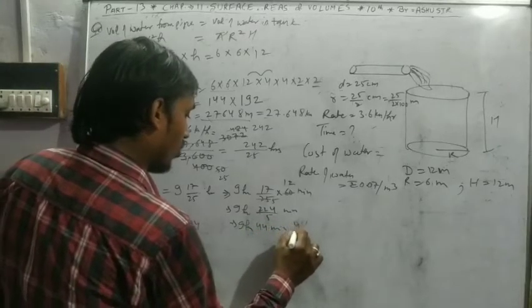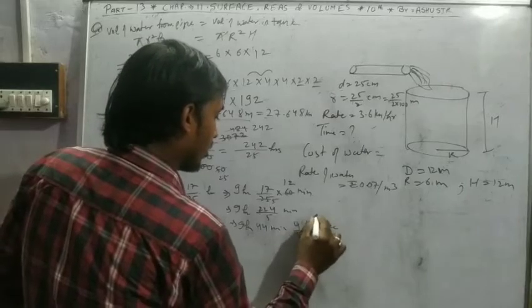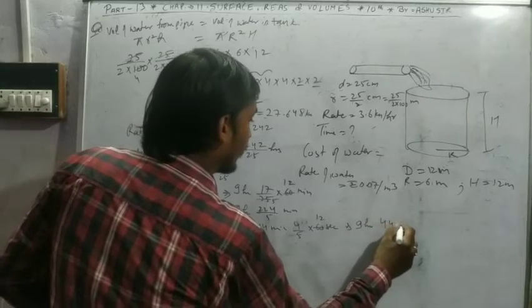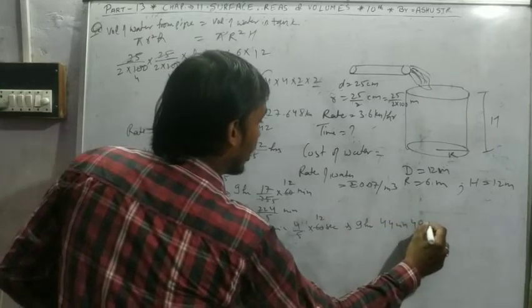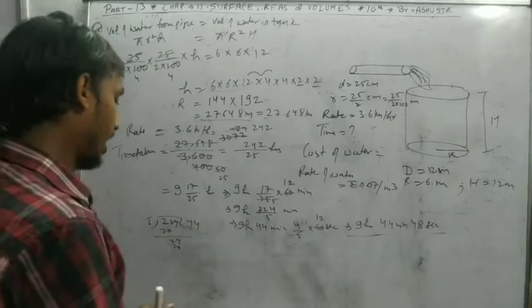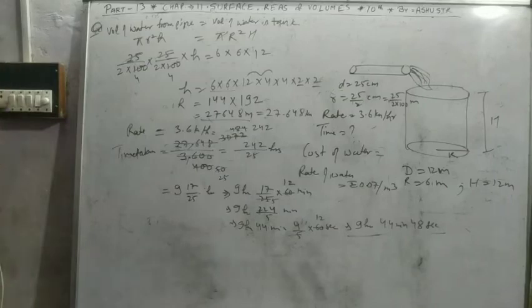And the remainder 4 upon 5 times 60 seconds gives 9 hours, 44 minutes, and 48 seconds. This is the total time taken by the pipe to fill the whole tank.